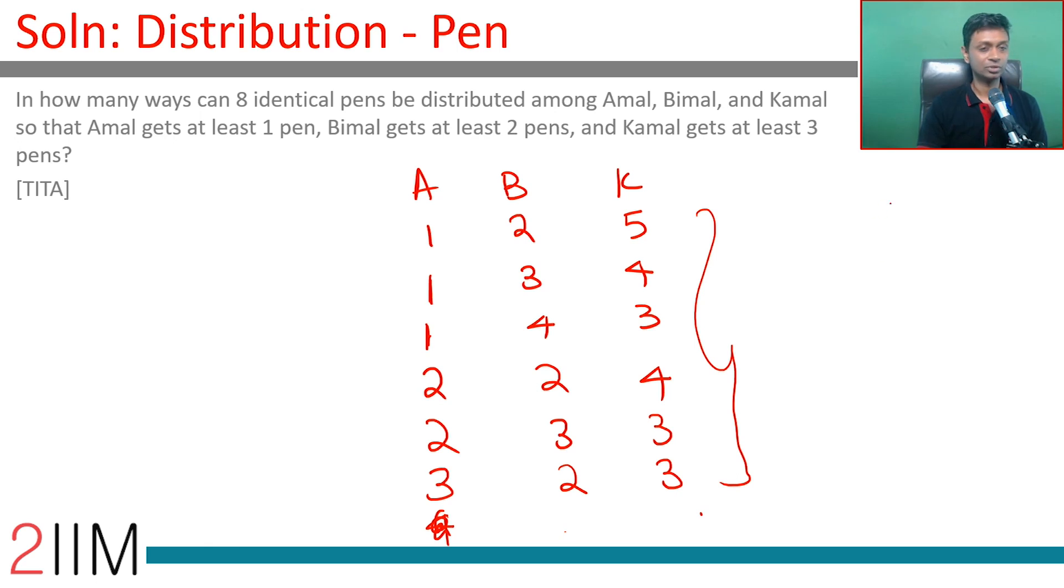So these are the 6 possibilities. We can list them down and find out, or we can be slightly more formal about it. Both work, obviously.